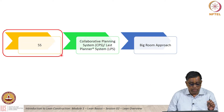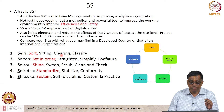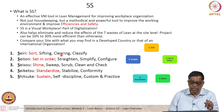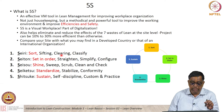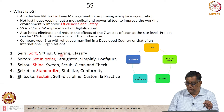We now look at the 5S approach. What exactly is 5S? It is an effective visual management tool in lean management for improving workplace organization. It is not only housekeeping as some people may think, but a methodical and powerful tool to improve the working environment and improve efficiency and safety in the long run. It is a visual workplace part of the digitalization approach, and it also helps in minimizing the 7 wastes of lean.